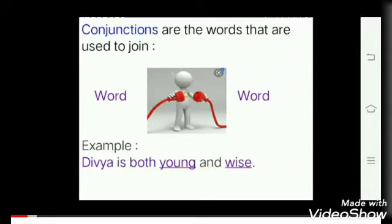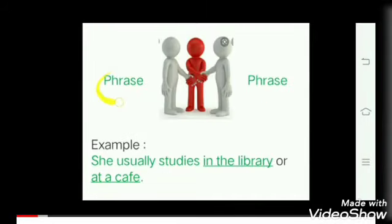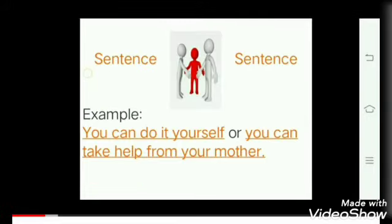Conjunctions are the words that are used to join two words. For example, Divya is both young and wise. Conjunctions are also used to join two phrases. For example, she usually studies in the library or at a cafe. Conjunctions are used to join two sentences. For example, you can do it yourself or you can take help from your mother.